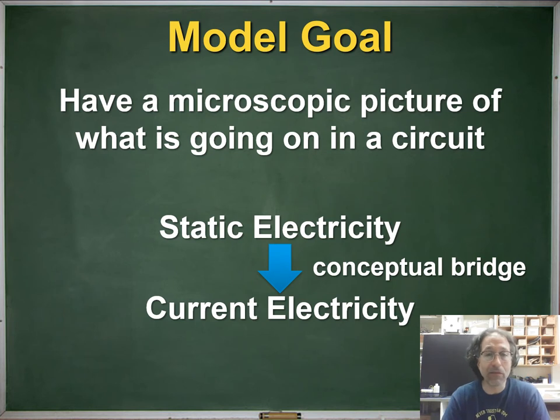So the goal of these models is to have or to develop a clear microscopic picture of what is going on in a circuit. And we start with exploring the ideas of static electricity and use that as a conceptual bridge to help build students understanding of current electricity. These are often taught as two almost distinct topics, but just by coincidence seem to have the same last name. But there's a really important conceptual connection between what goes on when we talk about static electricity and current electricity.